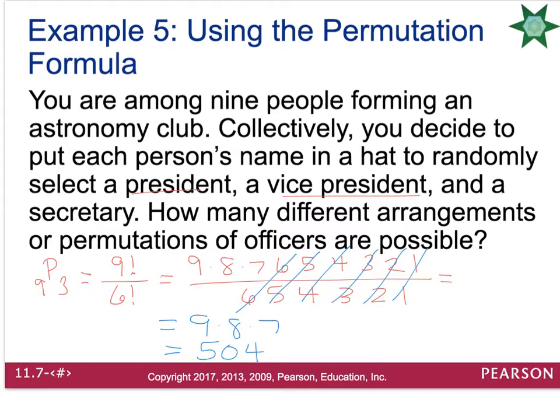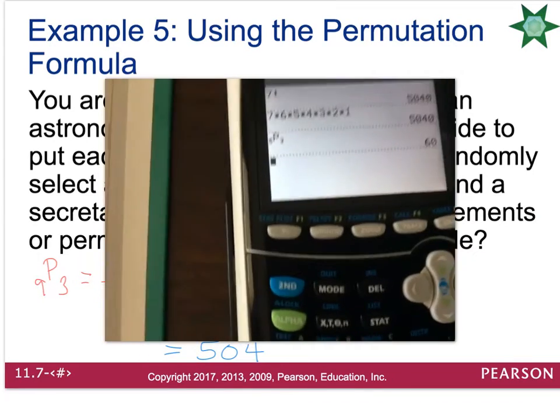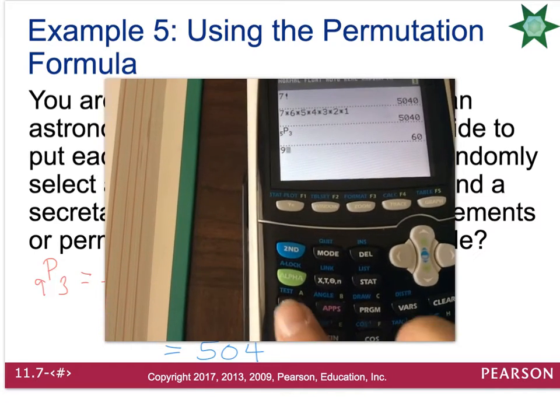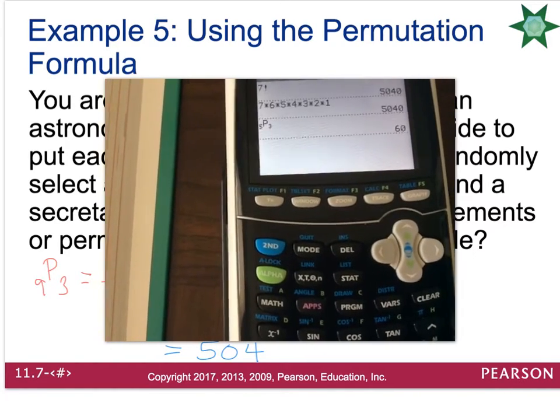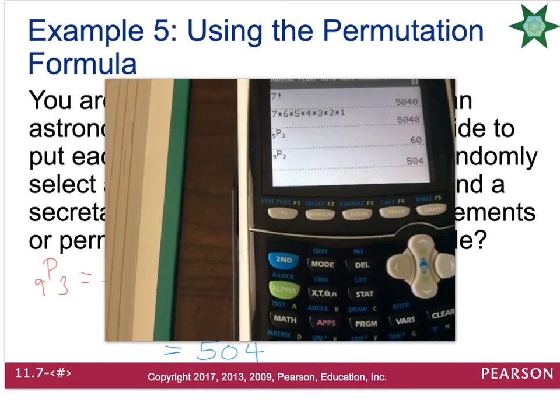Or you can do it with the calculator, which honestly I would recommend. And so I'm going to do that. I'm going to first type in my nine, go to math, over to probability, down to permutation, type in my three, and voila, 504.